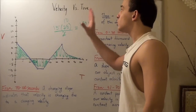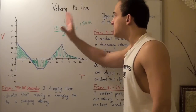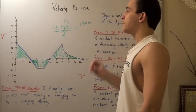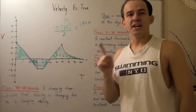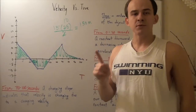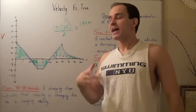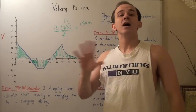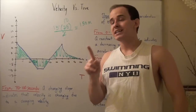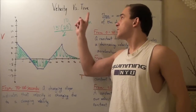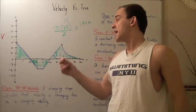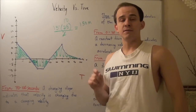In a displacement versus time graph, the area under the curve meant nothing. But in a velocity versus time graph, the area has meaning — it gives us the displacement of our object.